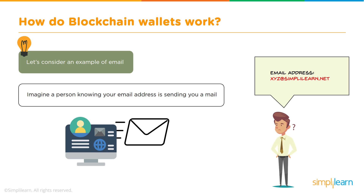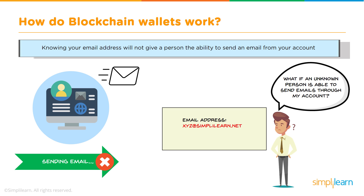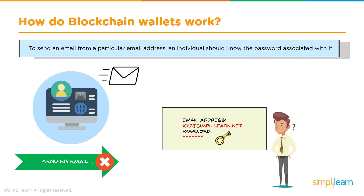In our regular day-to-day activity, if we want to receive an email from someone we give them our email ID and expect an email from them. But if an unknown person is able to send emails through my account — when I disclose my email ID I'm not assuming someone will send emails from my account, because for that they would need my password. Knowing your email address does not give a person the ability to send an email from your account. You are not giving your password; you are just giving the email address.